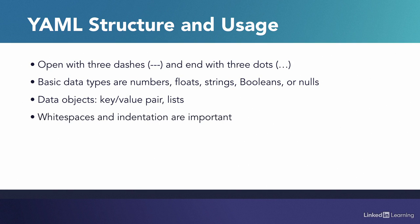Unlike JSON and XML, YAML does not use brackets or tags to represent hierarchy. It uses new lines and spaces. If two items share the same indentation, it means they're at the same level.